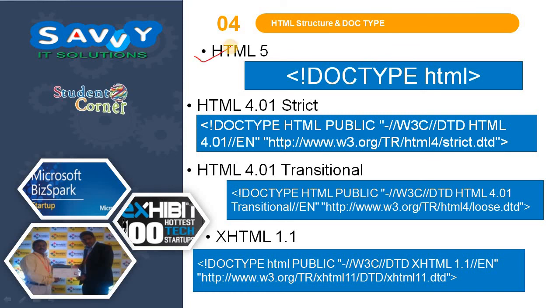For HTML5, the doctype is represented as <!DOCTYPE html>. For HTML4.01 strict and transitional, there are specific doctype declarations used to represent them.